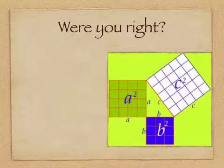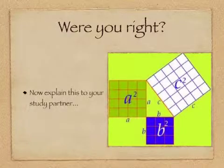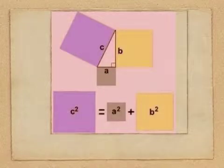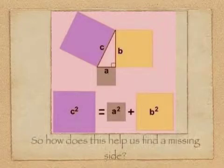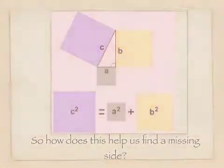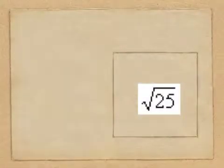The hypotenuse, A-square plus B-square. A-square plus B-square, the sum equals C-squared.